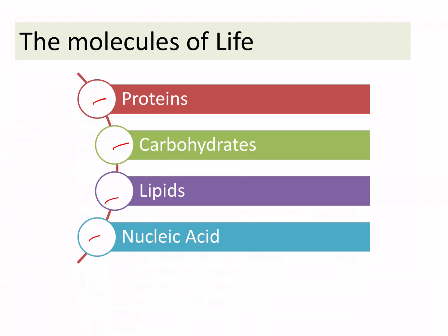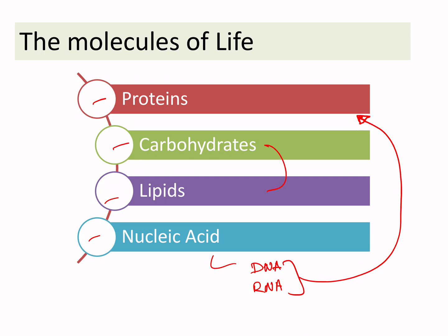Nucleic acids are basically of two main types: deoxyribonucleic acids and ribonucleic acids, which is the DNA and the RNA, and both of them are mainly involved in the synthesis of the proteins. Carbohydrates and lipids give rise to both structure and a main source of energy.